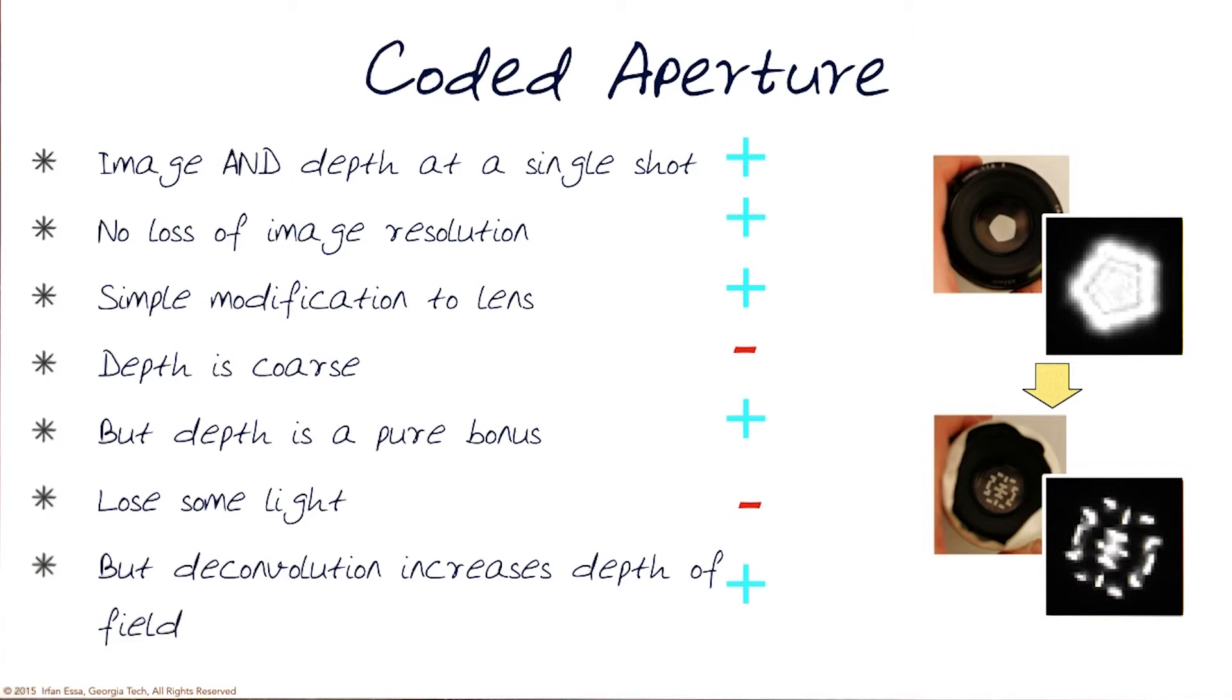But we can do deconvolution and increase depth of field after the fact from a single image. So in essence, this is like a light field camera where we get defocusing and depth information by changing something in front of the lens itself, the opening or on the plane of the lens, rather than changing the sensor.